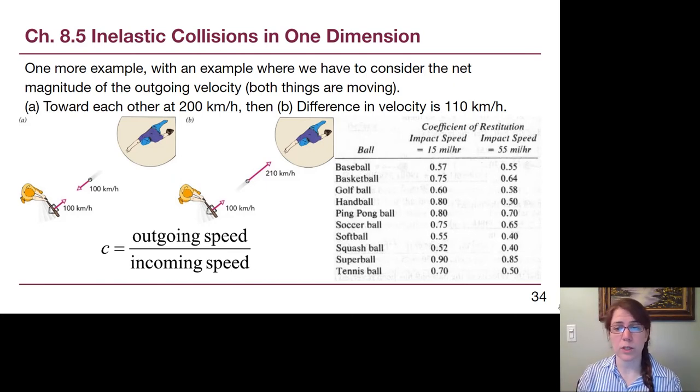We can think of another example and compare it to this list of recorded coefficients of restitution, where instead of having the floor that doesn't move, we can imagine for the, before the collision, the incoming speed, the baseball is heading at 100 kilometers per hour toward home plate, and the bat is heading 100 kilometers per hour towards the pitcher. And so these things are coming together at 200 kilometers per hour. And then when the batter follows through and continues to move at 100 kilometers per hour, now the ball is moving at 210 kilometers per hour, where they're moving away from each other by only 110 kilometers per hour, since they're both moving in the same direction. So the outgoing speed, 110, divided by the incoming speed, 200, would give us a value of 0.55 for this baseball. And if we look at this table of recorded values, baseballs do tend to have coefficients of restitution between 0.55 and 0.57.